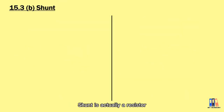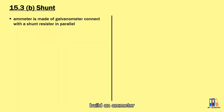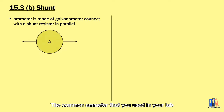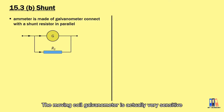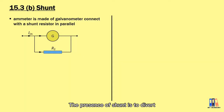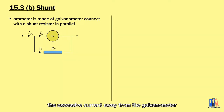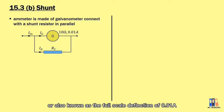Next, we're going to look at the shunt. A shunt is a resistor that connects in parallel with the galvanometer to build an ammeter. The common ammeter you use in your lab is made of one moving coil galvanometer and a shunt. The moving coil galvanometer is very sensitive — it can only receive a very small amount of current. The purpose of the shunt is to divert the excessive current away from the galvanometer.